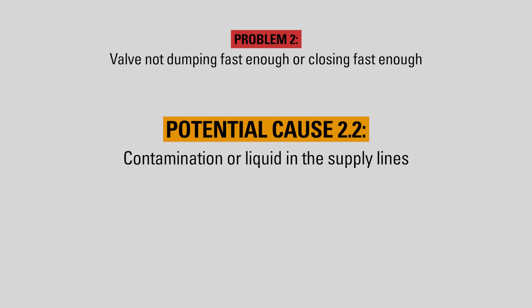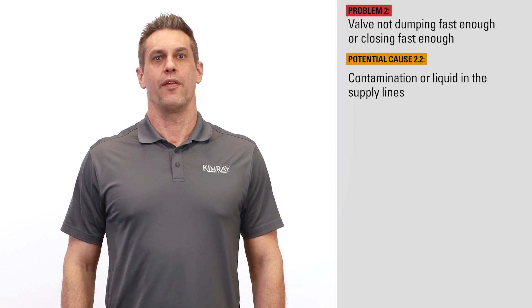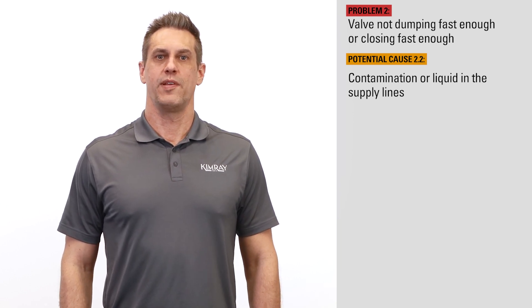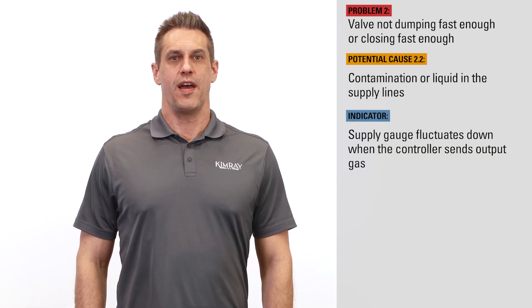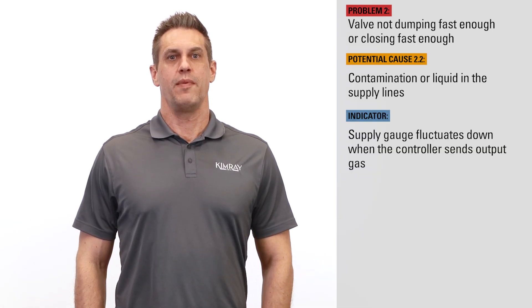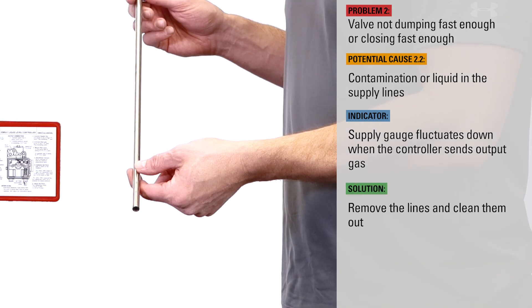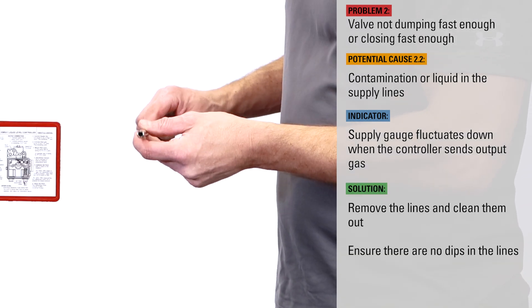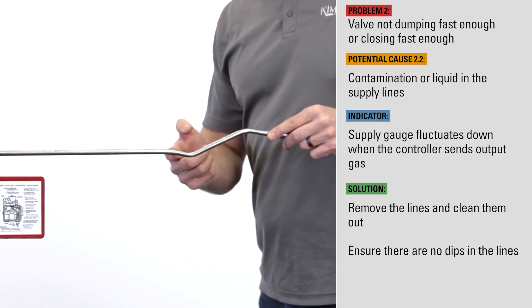If the supply lines coming into the controller are impeded by liquid or other contaminants, the flow of supply gas could be slowed down. If the supply gauge fluctuates down when the controller sends output gas, this may be an indication that the supply lines are restricted. Remove the lines and clean them out. Ensure there are no dips in the lines where moisture could collect and pool.